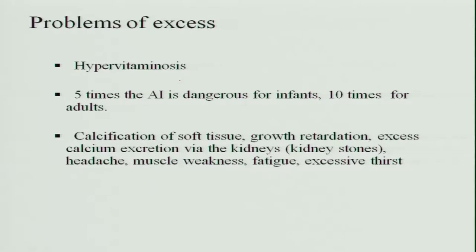Since fat-soluble vitamins are stored in the liver, excess of vitamin D causes problems — hypervitaminosis. If you take vitamin D five times more than the recommended allowance, especially for infants, it becomes dangerous, and if it is more than ten times it is dangerous for adults. Excess vitamin D causes calcification of soft tissues, growth retardation, and excess calcium excretion via kidneys. This overburdens the kidneys and can form kidney stones. Other symptoms include headache, muscle weakness, fatigue, and excessive thirst.